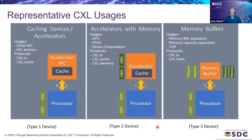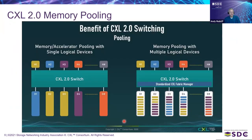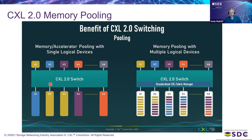In CXL 2.0, switches have been added, and as part of switching you get this pooling configuration. There's the single logical device model, where memory devices connect through a switch to different hosts. The color coding shows how hosts see these Type 3 CXL devices as if they're attached directly to them, while the switch provides the flexibility of changing which hosts are connected — and that's what gives you pooling.